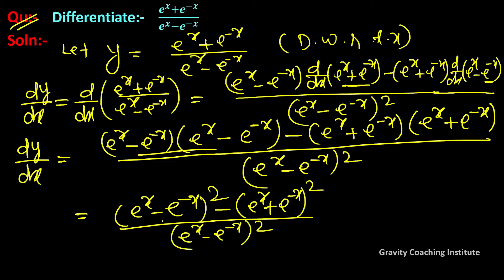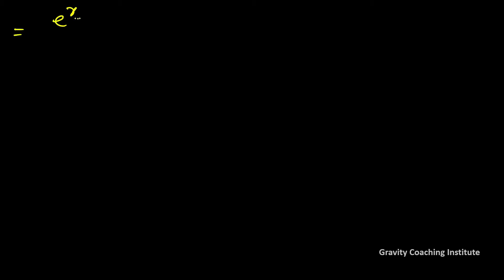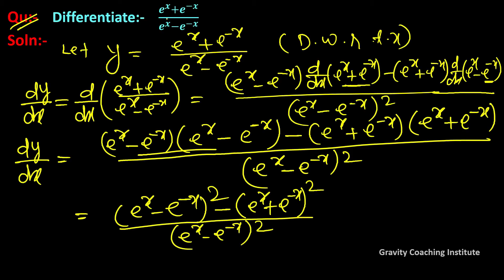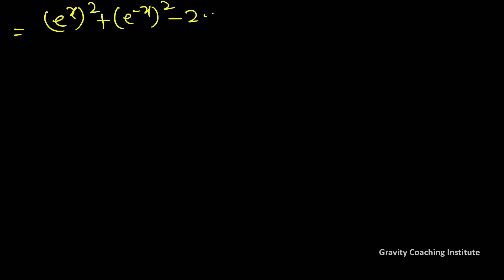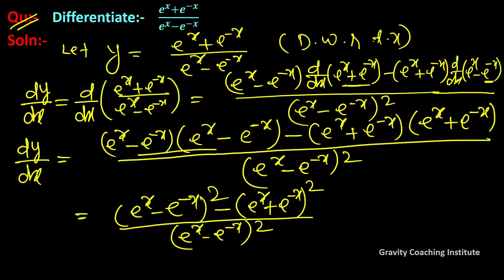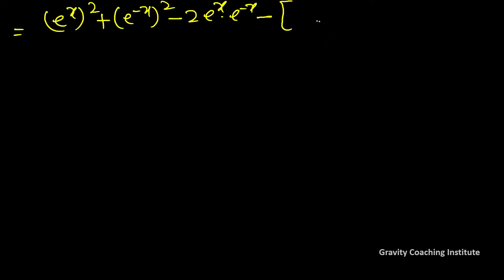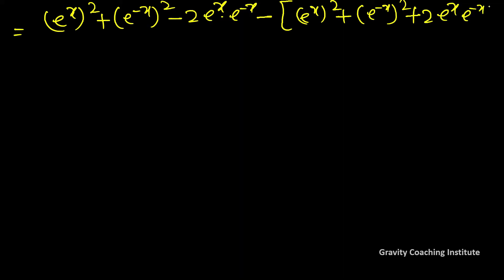अब (a − b)² और (a + b)² की identity use करेंगे। (eˣ − e⁻ˣ)² = e²ˣ + e⁻²ˣ − 2·eˣ·e⁻ˣ, और (eˣ + e⁻ˣ)² = e²ˣ + e⁻²ˣ + 2·eˣ·e⁻ˣ, upon (eˣ − e⁻ˣ)² ।